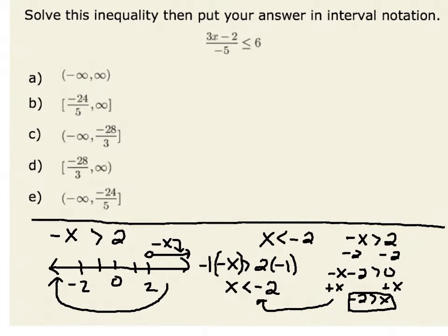Now I'm ready to go back to solve the original inequality. Like we said earlier, the first step would be to multiply both sides of the inequality by negative 5. This is going to reverse the inequality sign.